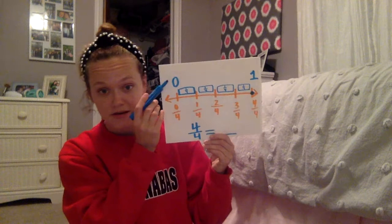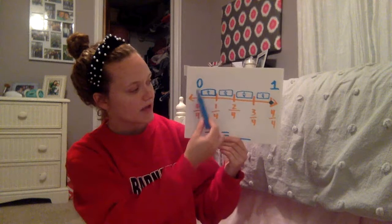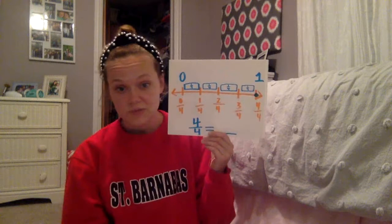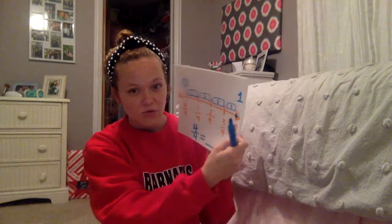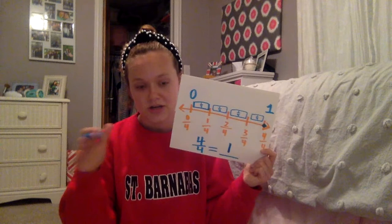We have a number line here. I started at zero-fourths — zero over anything is just going to equal zero. I'm counting by fourths, just like in our last video: one-fourth, two-fourths, three-fourths. That brings me to one. Any number over itself is just going to equal one. Seven thousand nine hundred and twenty-two over seven thousand nine hundred and twenty-two equals one. Any number over itself just equals one.